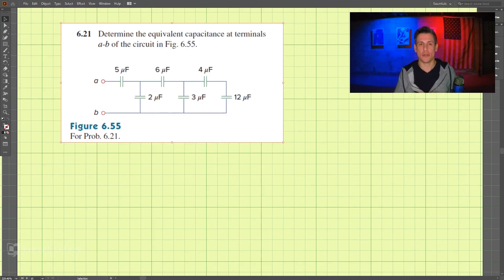So this is 621 here, and what we're looking to do is determine the equivalent capacitance at terminals A and B. Let's start out by combining these two.